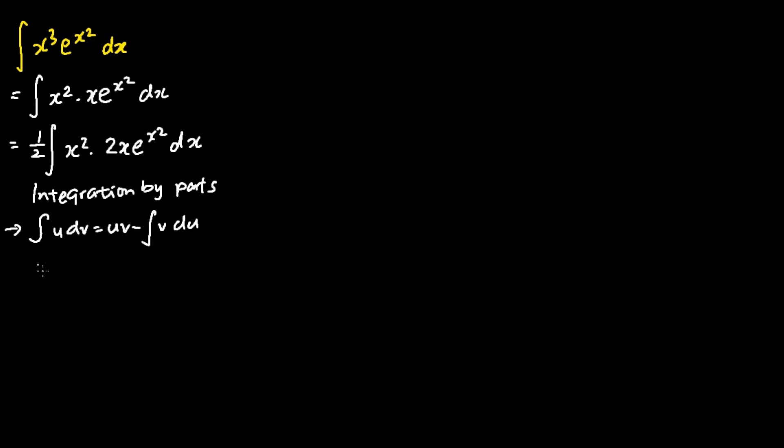For this particular problem, we will let u be equal to x squared, and my dv be equal to 2x e to the power of x squared dx.